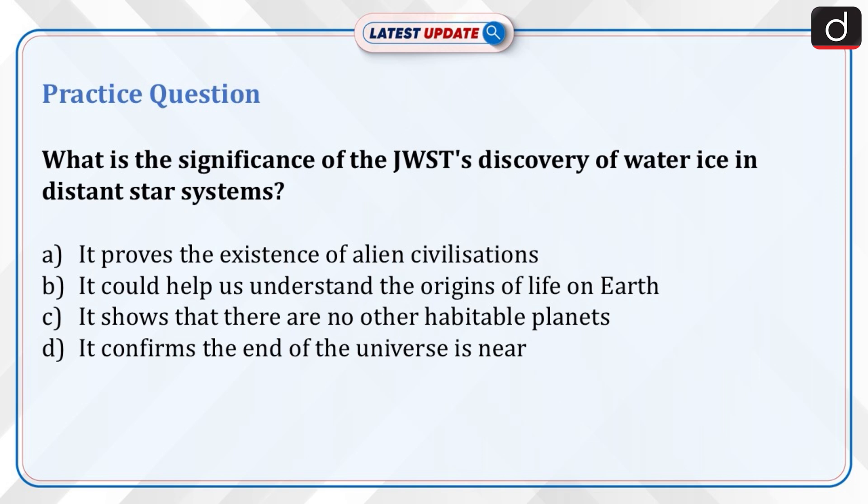It's time to test your knowledge. Question: What is the significance of the JWST's discovery of water ice in distant star systems? A) It proves the existence of alien civilizations. B) It could help us understand the origins of life on Earth. C) It shows that there are no other habitable planets. D) It confirms the end of the universe is near.